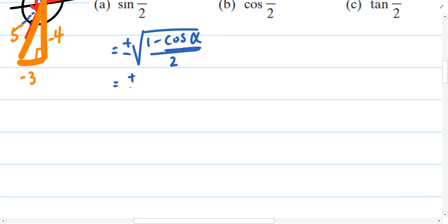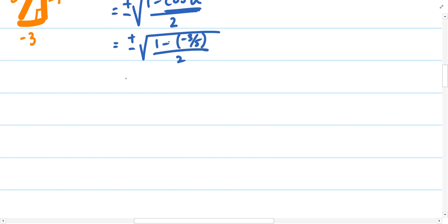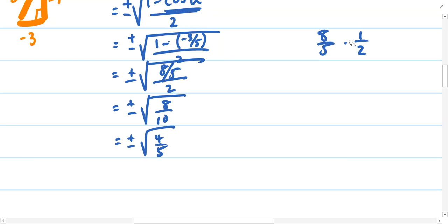We already know what cosine of alpha is. Let's go ahead and make a substitution: plus or minus 1 minus negative 3 fifths divided by 2. This would be the same as 1 plus 3 fifths, so that's 5 fifths plus 3 fifths, that's 8 fifths. We've got 8 fifths over 2, and that's the same as 8 tenths, or positive and negative square root of 4 fifths when reduced.